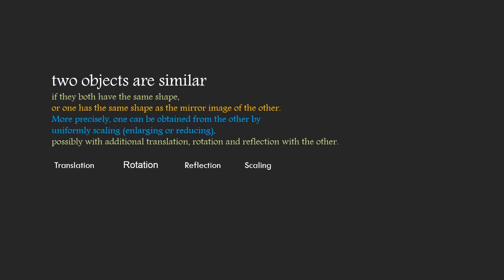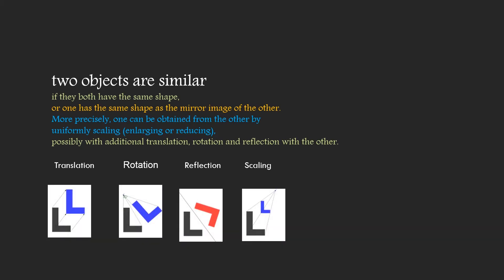Two objects are said to be similar when they both have the same shape, or one has the same shape as a mirror image of the other. More precisely, one can be obtained from the other by uniform scaling — that means enlarging or reducing the size — possibly with additional translation, rotation, and reflection. But the shape matters with similarity. When two objects are said to be similar, they should have the same shape. The size doesn't matter.